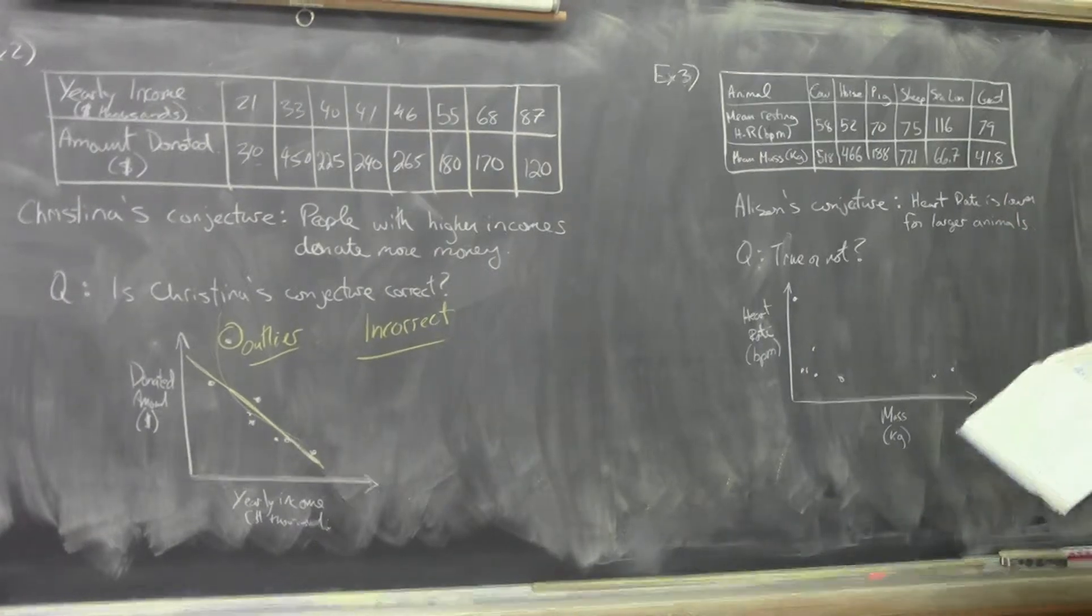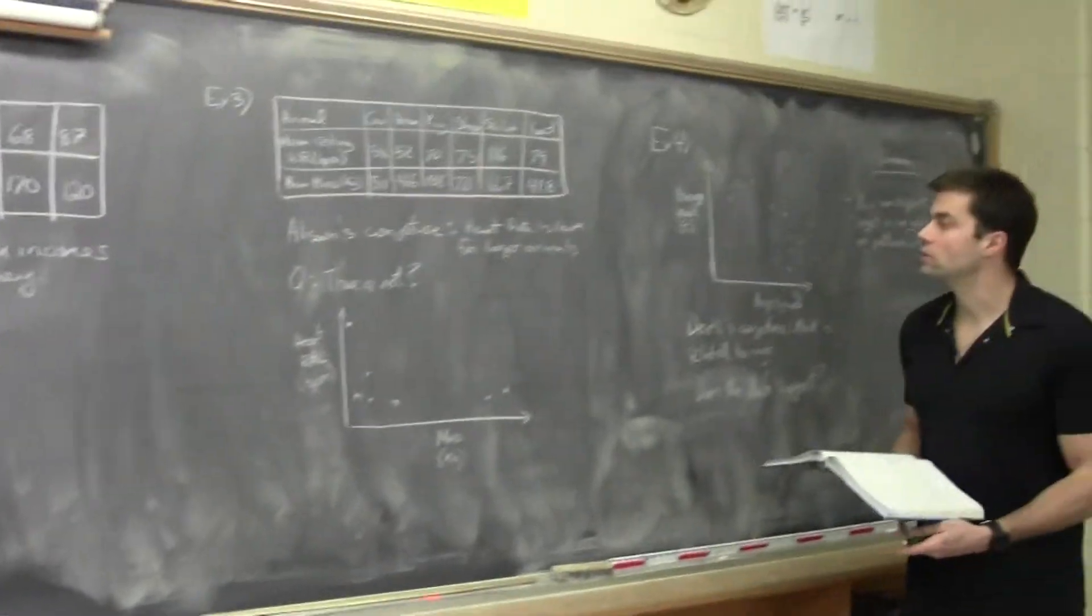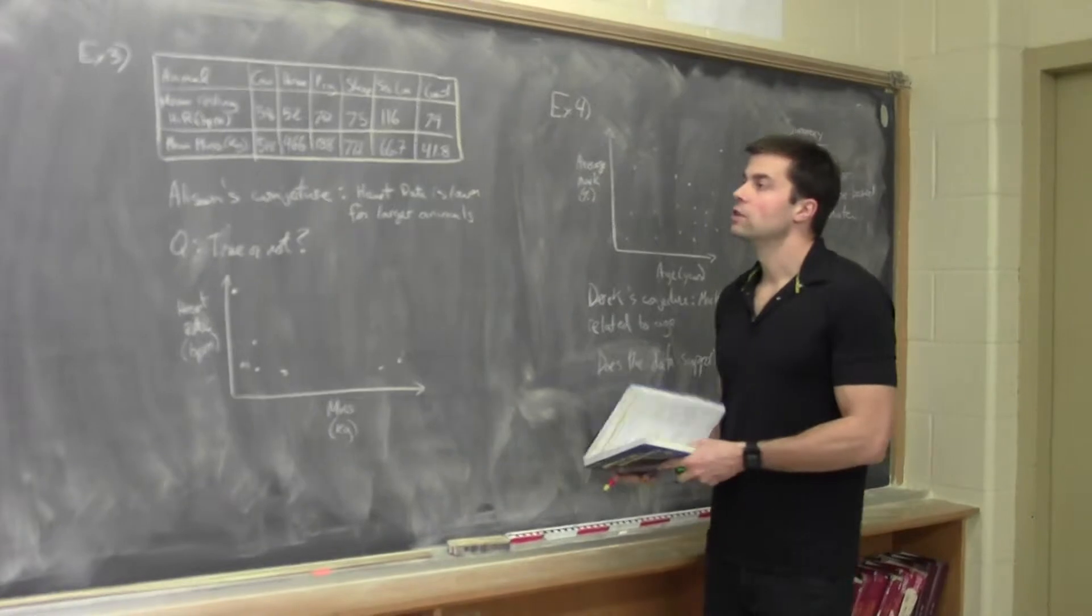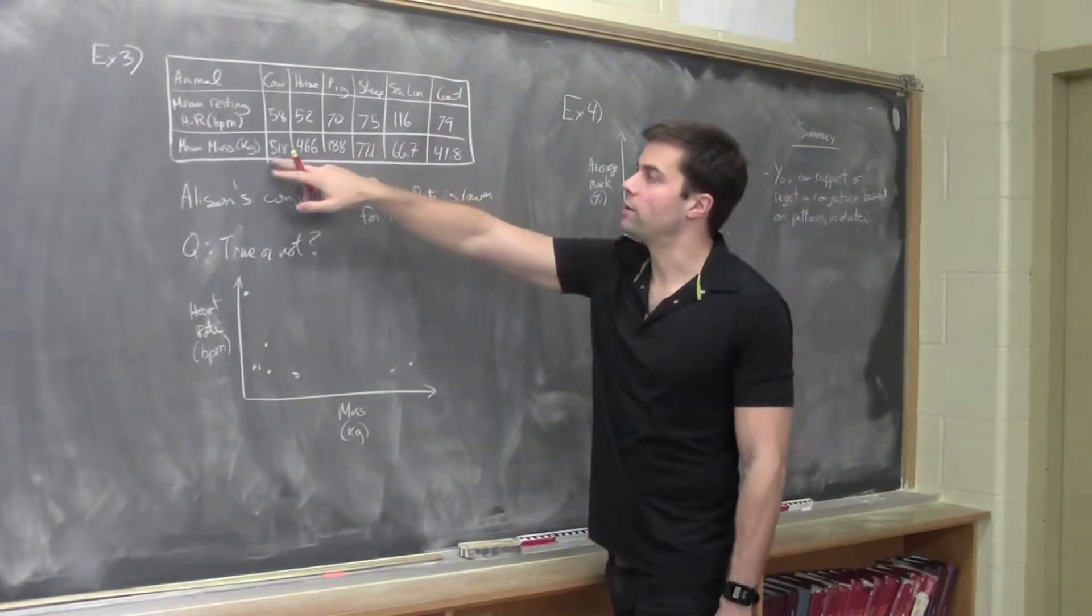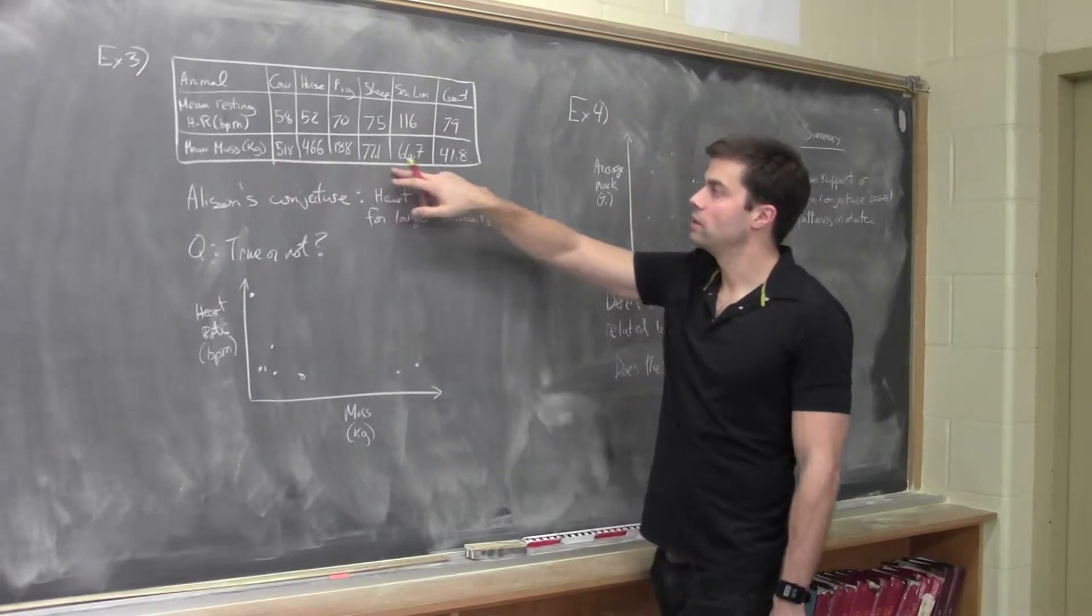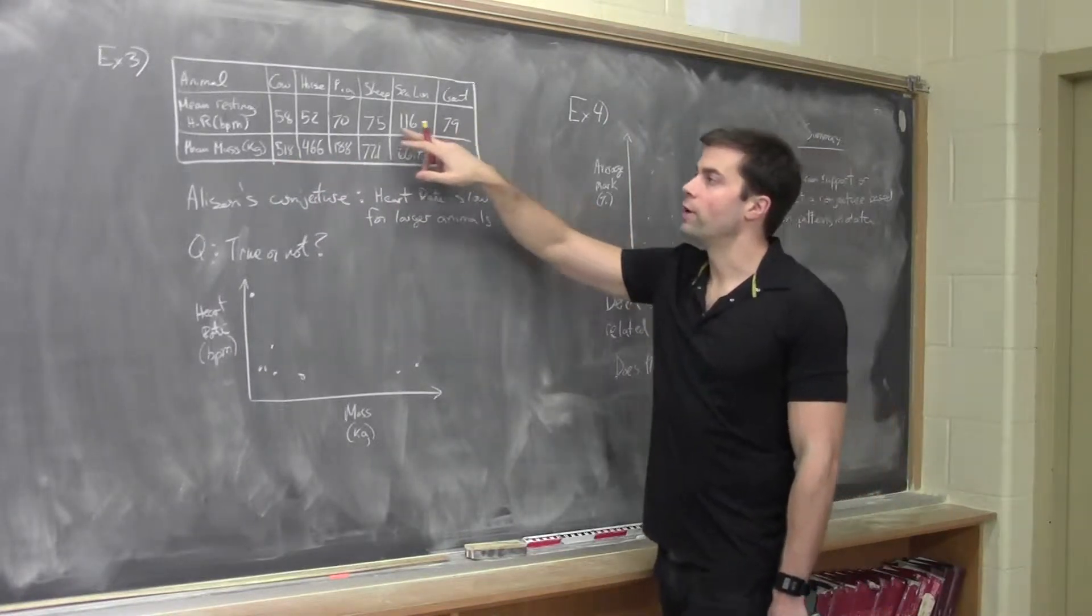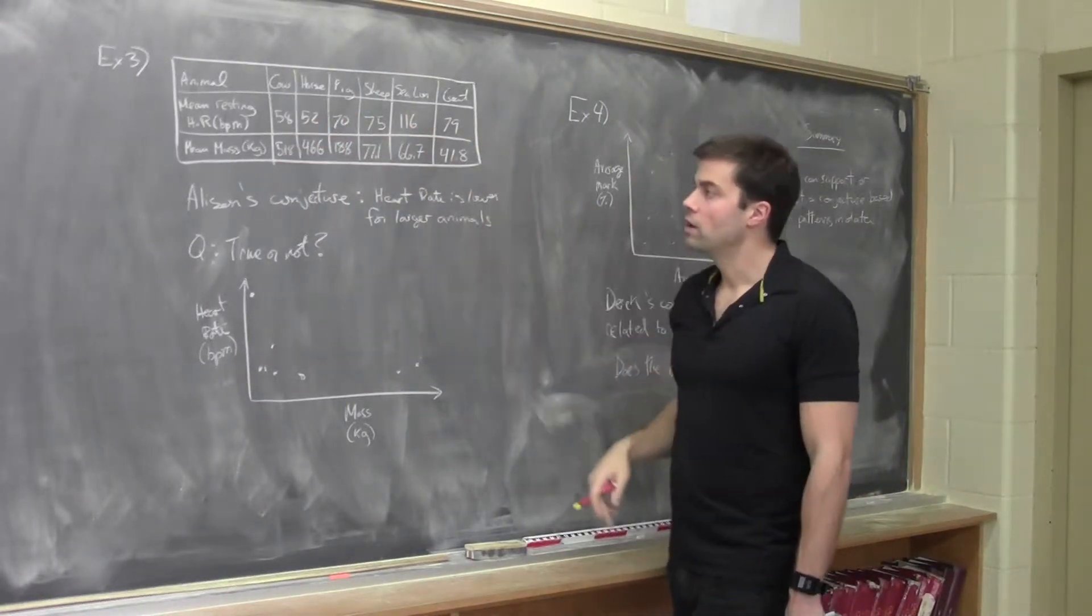All right, the next example. Allison's conjecture. Heart rate is lower for larger animals. So we have a bunch of animals up here. They're measured by their size, so in kilograms here, and then their heart rate is measured.